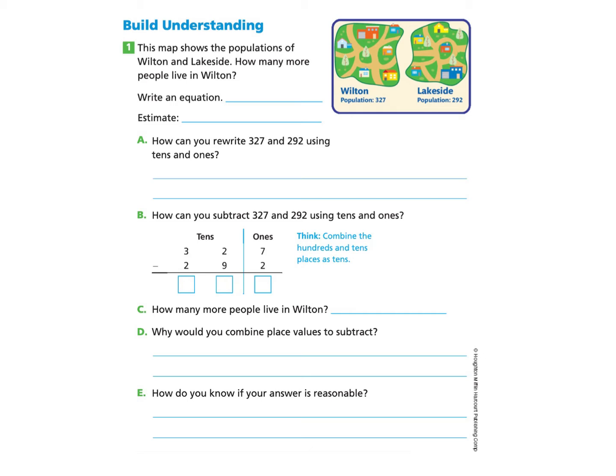We will start under Build Understanding Part 1. This map shows the populations of Wilton and Lakeside. How many more people live in Wilton? So we see that Wilton has a population of 327 and Lakeside has a population of 292.